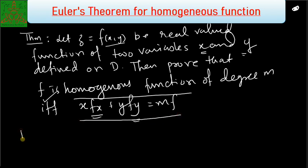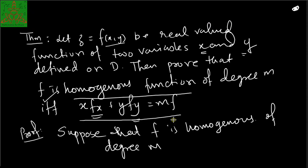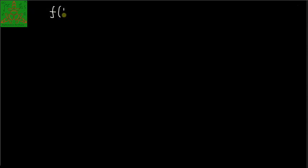Now I will prove this theorem. First, let us assume that f is homogeneous of degree m and prove that it satisfies the expression. If f is homogeneous of degree m, we can say that f(tx, ty) = t^m · f(x, y).